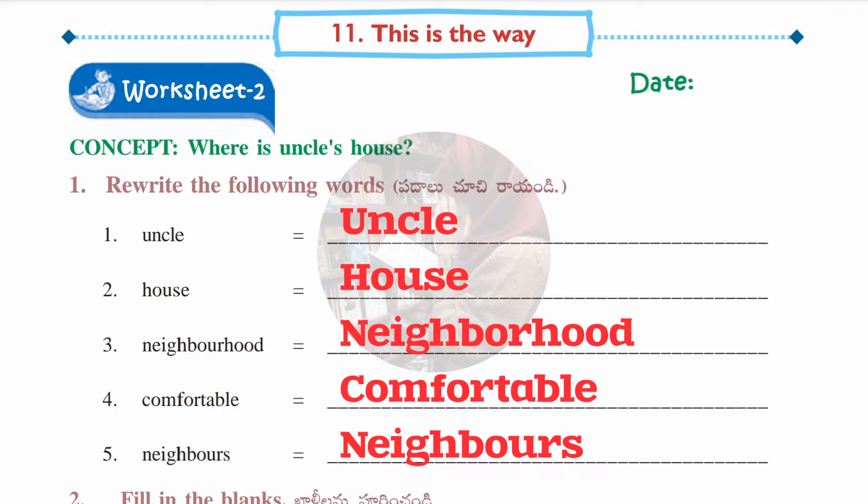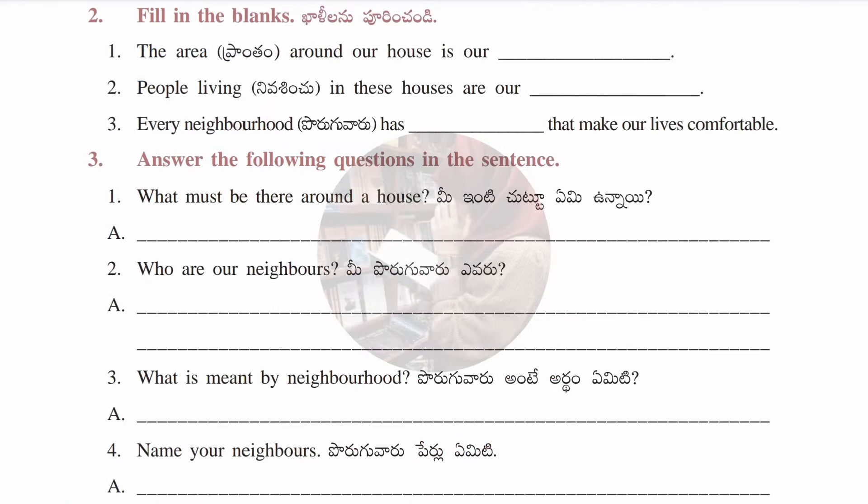Worksheet number two is taken from the concept 'Where is Uncle's House.' In the first section we have given some words to rewrite, and you must make sure that the first letter of each word is capital. The words are: Uncle, House, Neighborhood, Comfortable, and Neighbors.